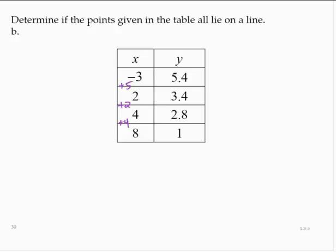From 5.4 to 3.4, that's a decrease of 2. From 3.4 to 2.8, that's a decrease of 0.6. And from 2.8 to 1, that's a decrease of 1.8.